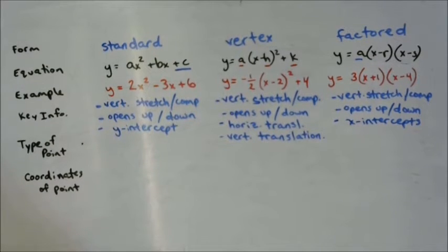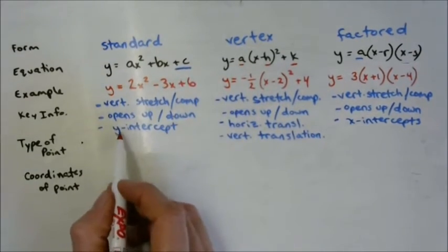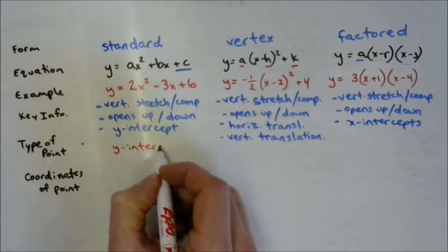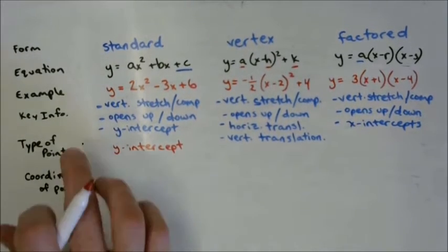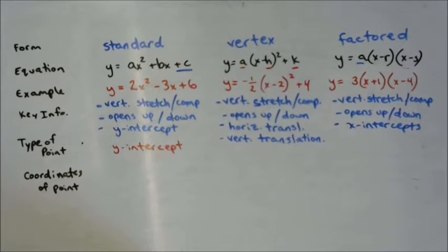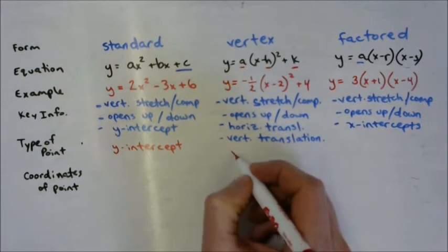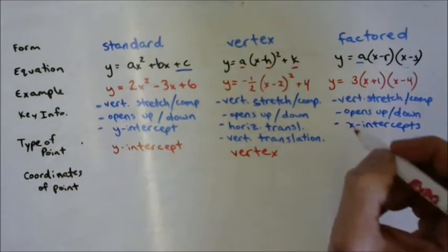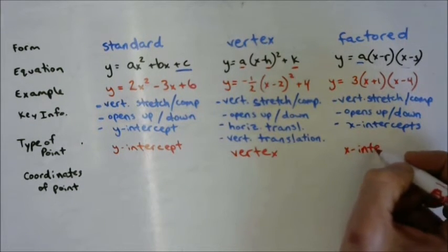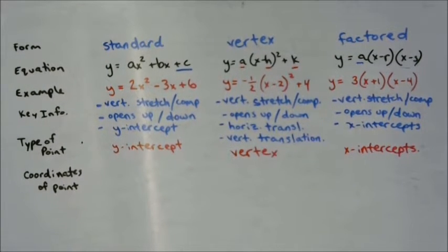What is the point that we can get just from looking at standard form? It's the y-intercept. The y-intercept is a point on the function, on the curve. When we're talking about quadratics, it will always have a y-intercept. Vertex form gives us the vertex. Factored form gives us the x-intercepts — if there are any. There might be 1, there might be 2, there might be 0. All of these things can be represented by coordinates.